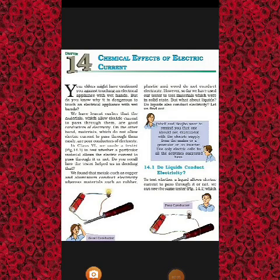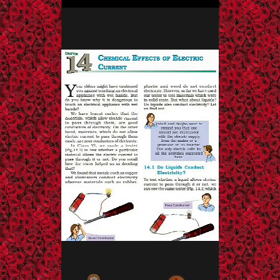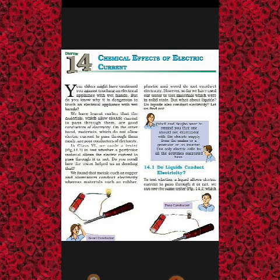Chapter 14 is Chemical Effect of Electric Current. First, what are the effects of electric current? Electric current can produce heating — it can heat up a substance. Electricity can make a body move, like in an electric fan. Electricity can produce light and brightness. Similarly, electricity can also bring about chemical changes in a substance, which is why we call it the chemical effect of electric current.